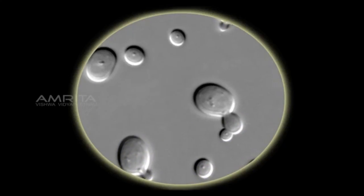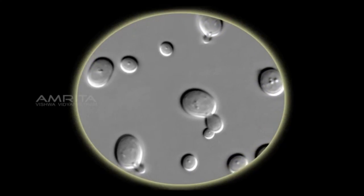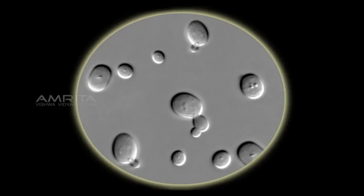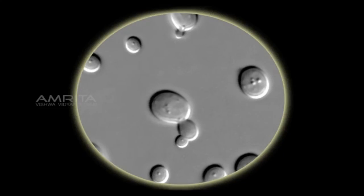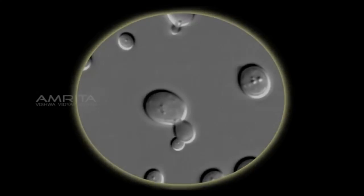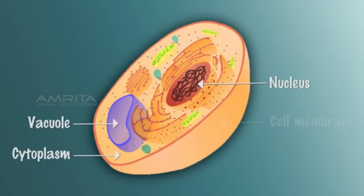We can also see the nucleus of the parent cell that splits into a daughter nucleus and migrates into each outgrowth. The bud detaches from the mother's body by forming a constriction at the base, which can be observed. A yeast cell has a nucleus, vacuole, cytoplasm, and a cell membrane.